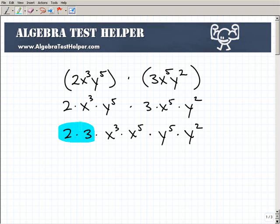Now let's simplify. 2 times 3 is 6 times x³ times x⁵. The property is: when the bases are the same, we simply add the exponents. So this is going to be x⁸.